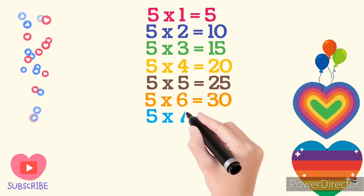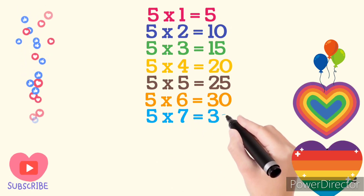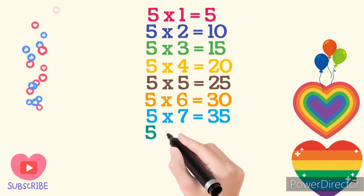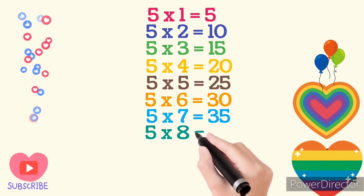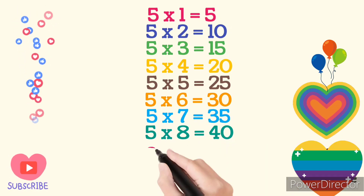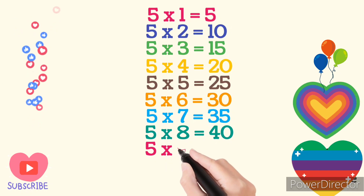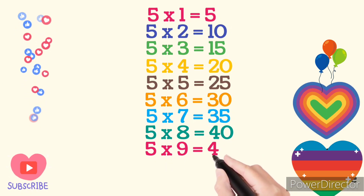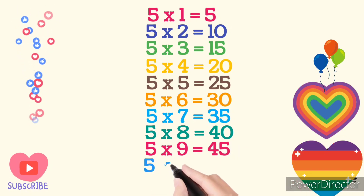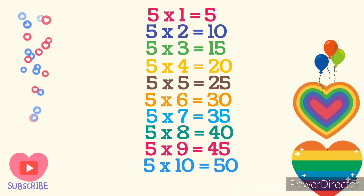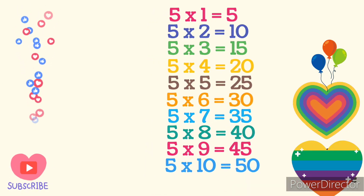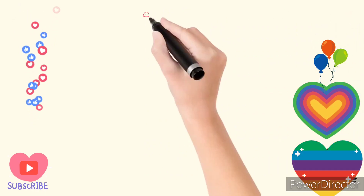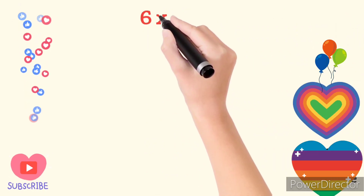5 times 7 are 35. 5 times 8 are 40. 5 times 9 are 45. 5 times 10 are 50. Table of 6.